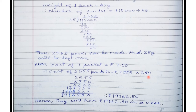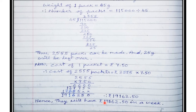Since the original price was 7.50, we place the decimal point two places from the right. So it becomes 19,162 rupees and 50 paise - that is 19,162.50 rupees in a week. So they will earn 19,162.50 rupees in a week. Similarly you can do the next one. Thank you.